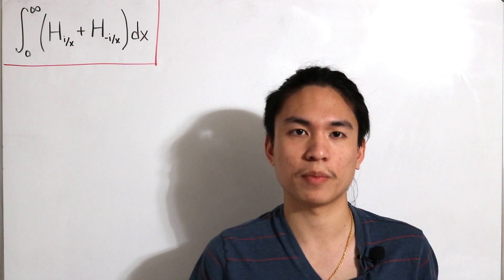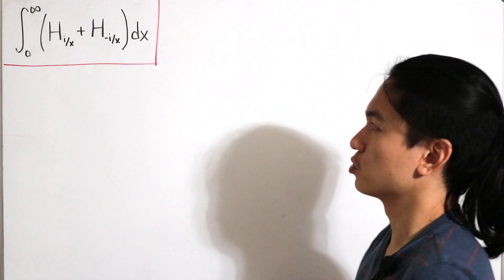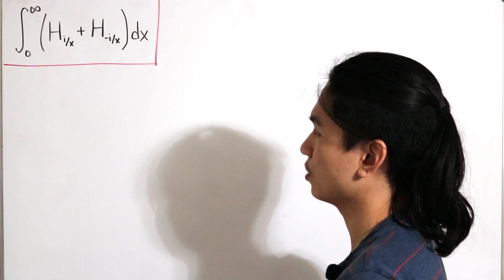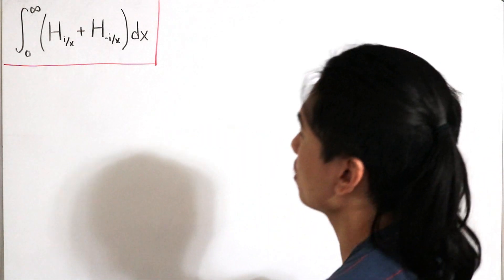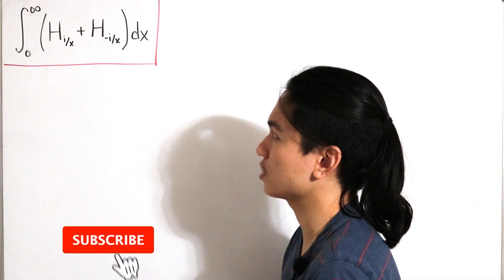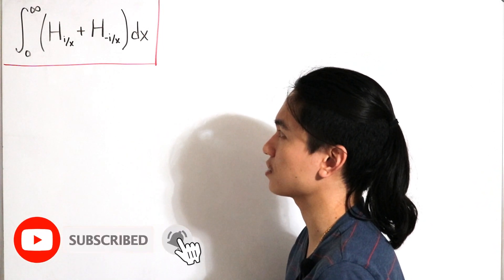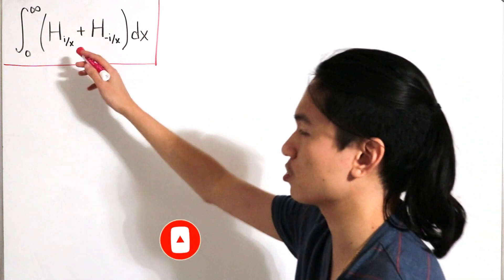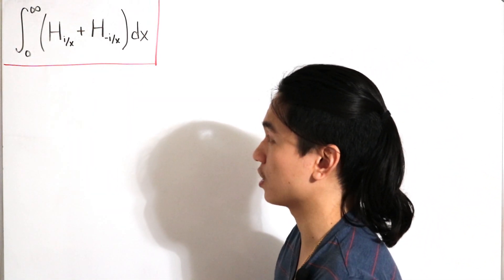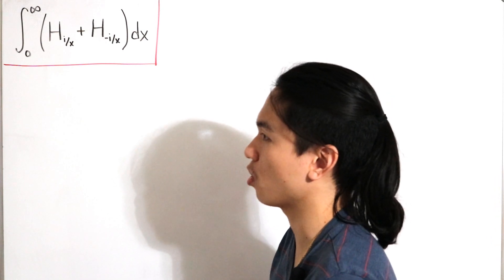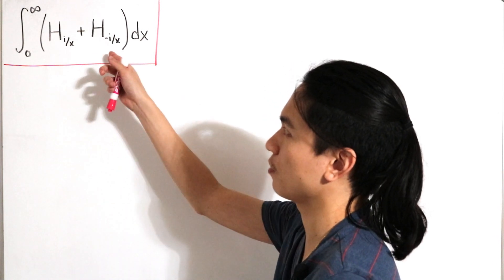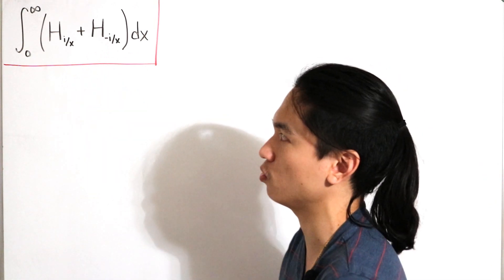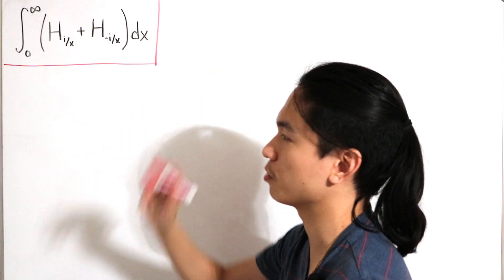Welcome back to another video. In today's video we have the following improper integral from zero to infinity — over the positive real line — of H sub (i/x) plus H sub (-i/x) dx, where the subscript i/x represents the i/x harmonic number, and similarly for the negative i/x harmonic number. We take those two harmonic numbers and integrate over the positive real line.